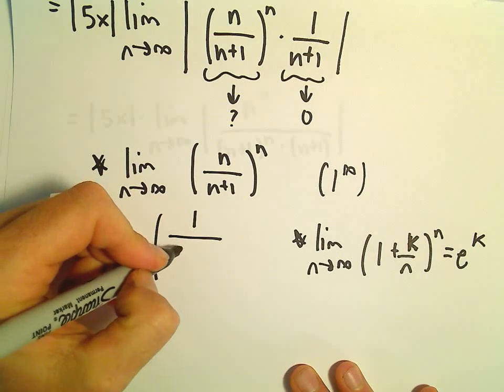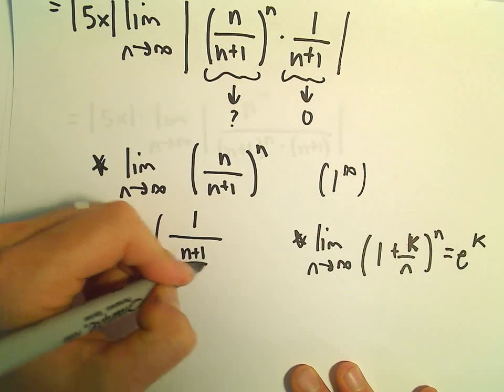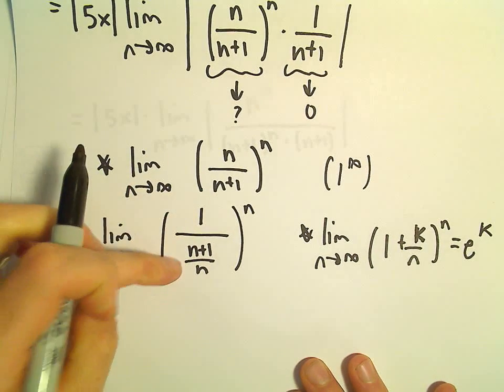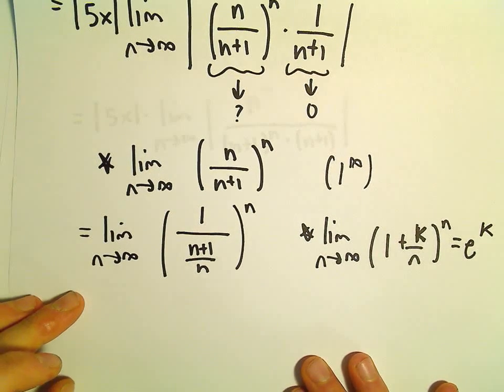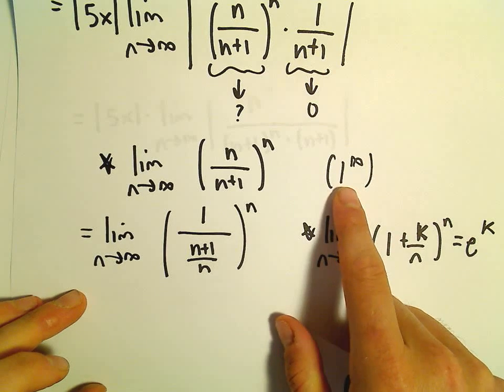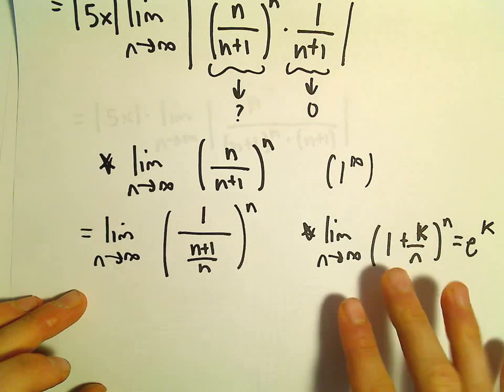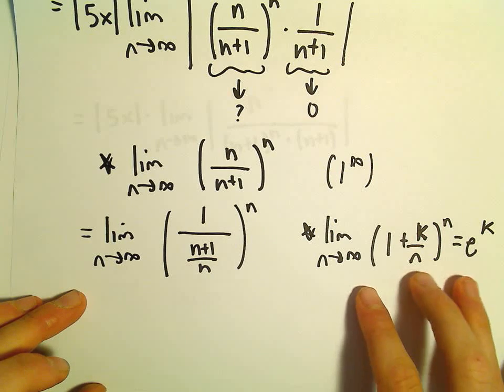Again, just 1 over the fraction would flip it, and that would give us that portion back. Again, you could use L'Hopital's rule on this. You could introduce natural logarithms and do L'Hopital's rule. I'm going to use this instead.